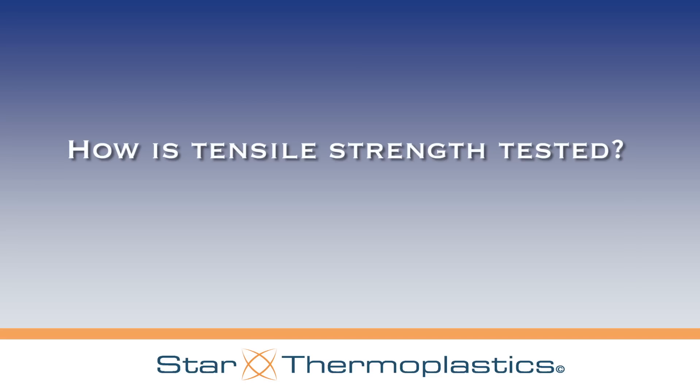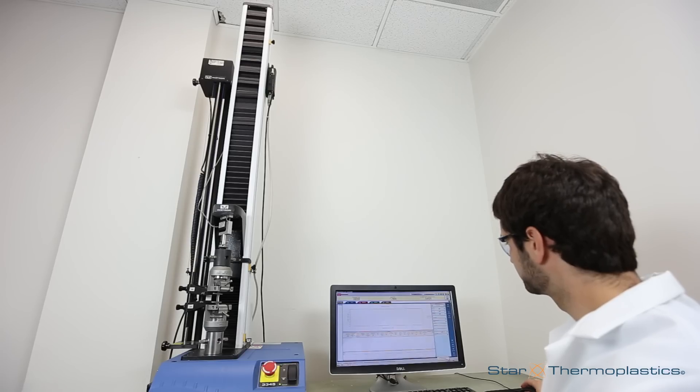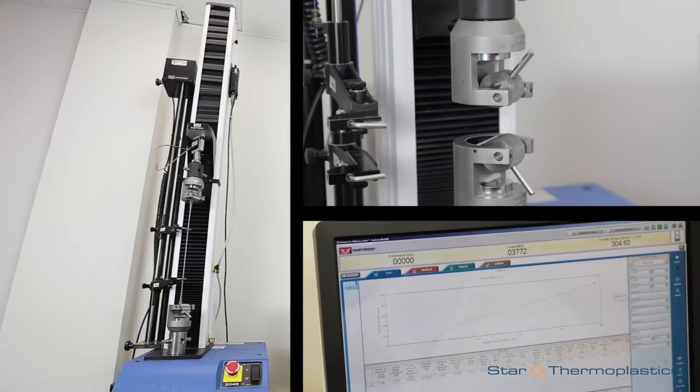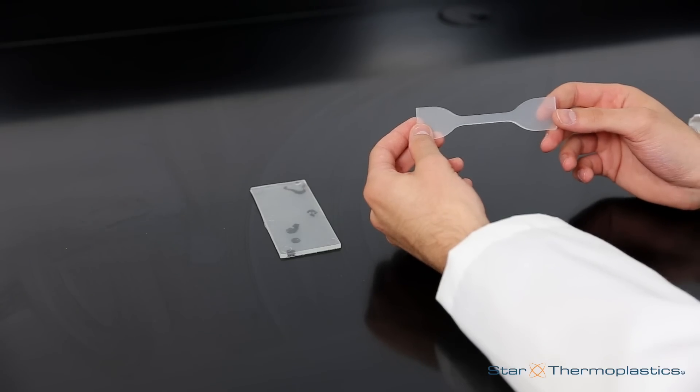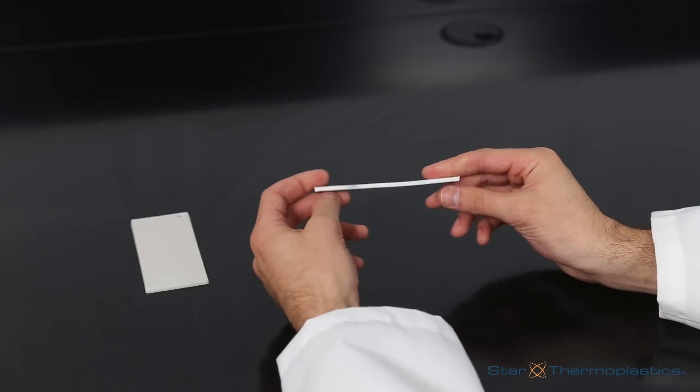Let's take a look at how tensile strength is tested. Here's a tensile testing machine from one of our five laboratories. In order to perform the test, you will first need the proper machine. You will also need a test strip that has been cut into the test shape. For our purpose, we cut them into a dumbbell shape.